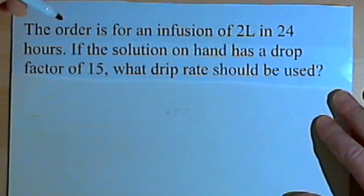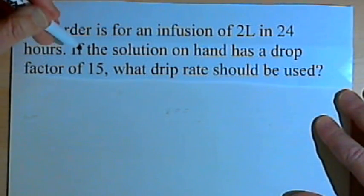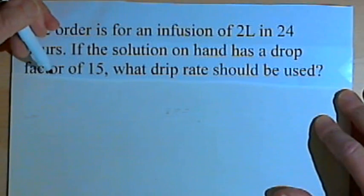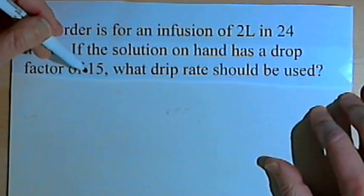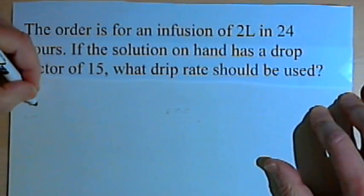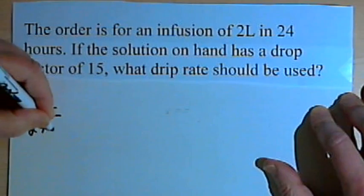This says the order is for an infusion of 2 liters in 24 hours. If the solution on hand has a drop factor of 15, what drip rate should be used? We'll start with the order: 2 liters over 24 hours.